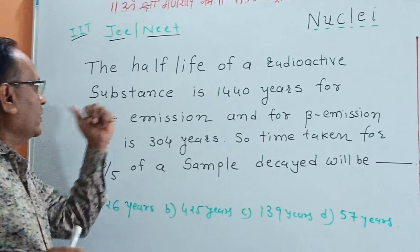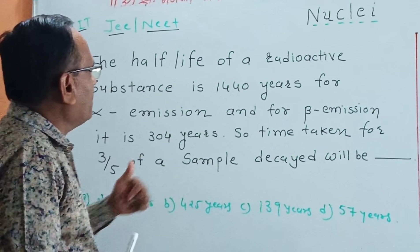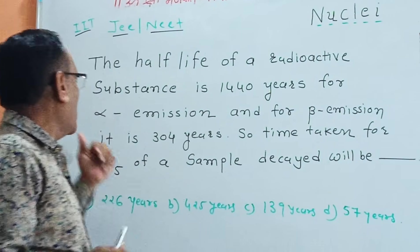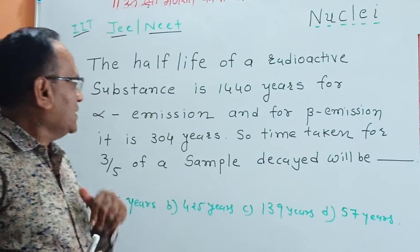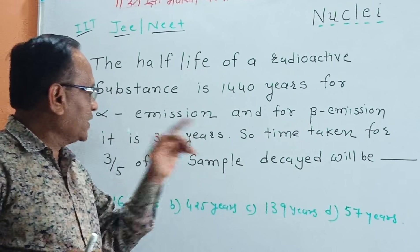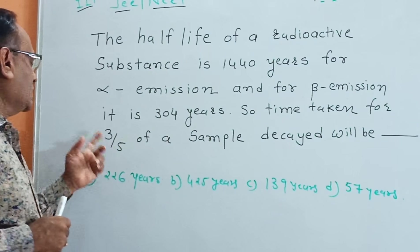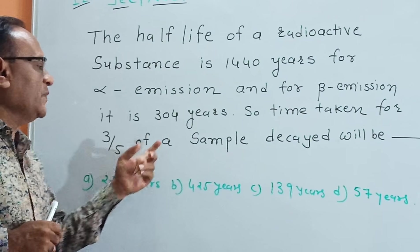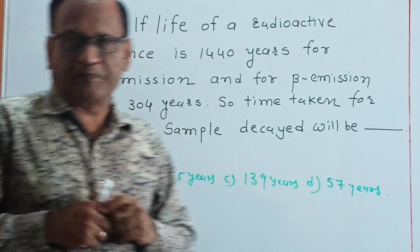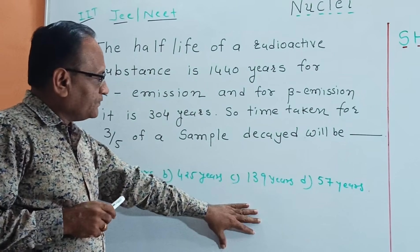The half-life of a radioactive substance is 1440 years for alpha emission and 304 years for beta emission. The question asks: what is the time taken for 3/5 of the sample to decay? Options are given.